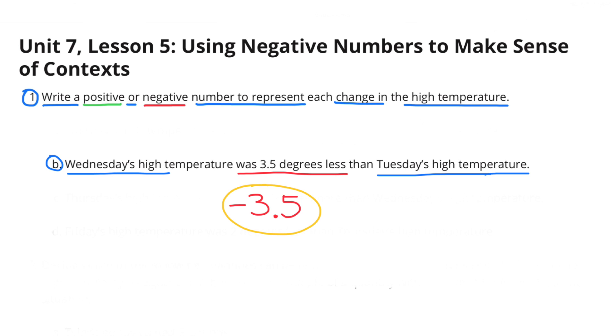B. Wednesday's high temperature was 3 and 5 tenths degrees less than Tuesday's high temperature. That would be negative 3 and 5 tenths.